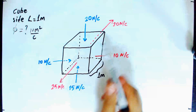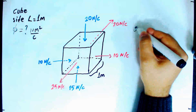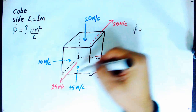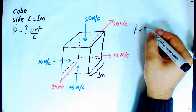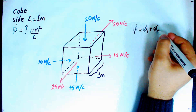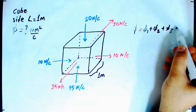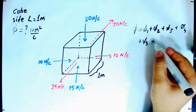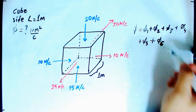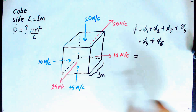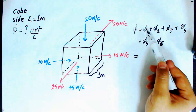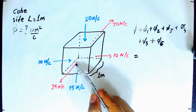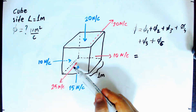Since the electric field vectors are uniform for each surface, we can immediately find the total flux by adding all fluxes through each surface. We have six surfaces: phi1, phi2, phi3, phi4, phi5, and phi6. Let's pick this face as phi1 — since the electric field vector is out of the volume, it will contribute a positive flux.